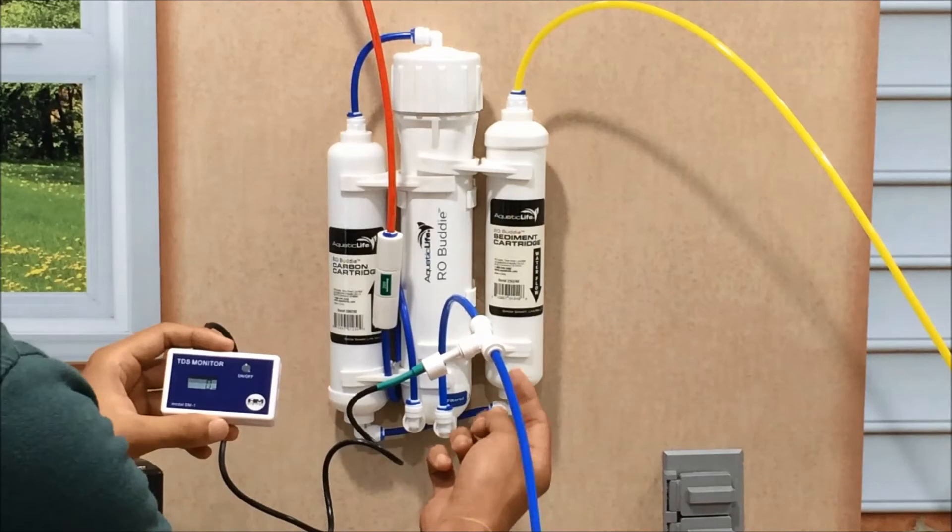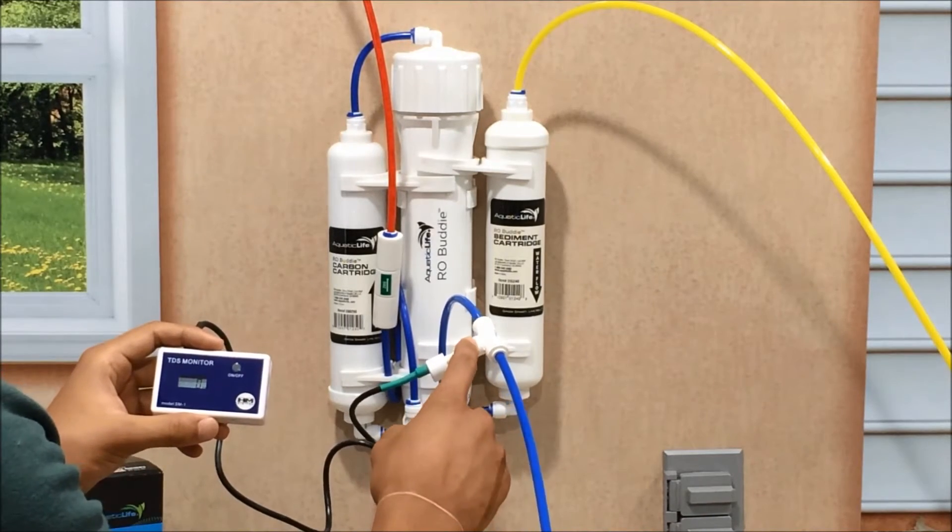All I did was use the included T on the filtered water line, and then insert the probe into this top T.